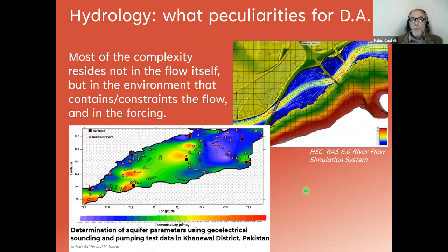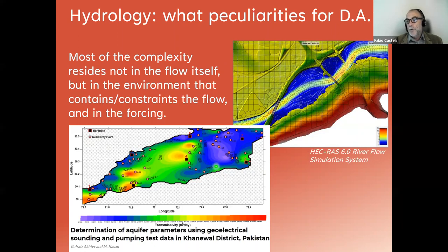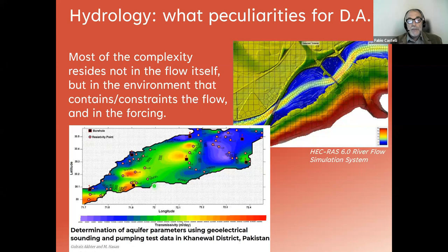First of all, most of the complexity of the problem resides not in the flow itself but in the environment that contains and constrains the flow, and eventually in the forcing. For example, groundwater flow is very slow from a fluid dynamic point of view — it is a laminar flow. So nothing complex from the point of view of the flow itself, but the characteristics of the media that contains the flow are very unknown because they are below the surface.